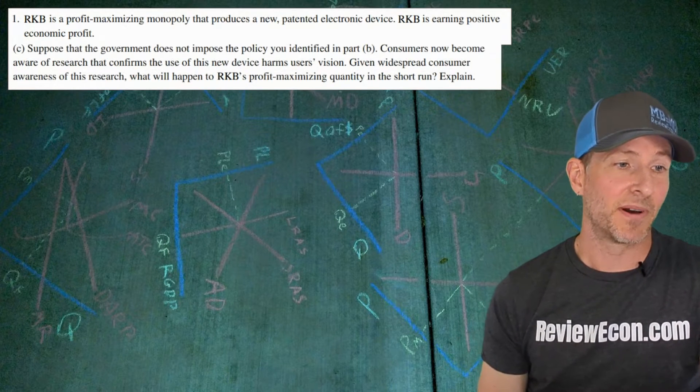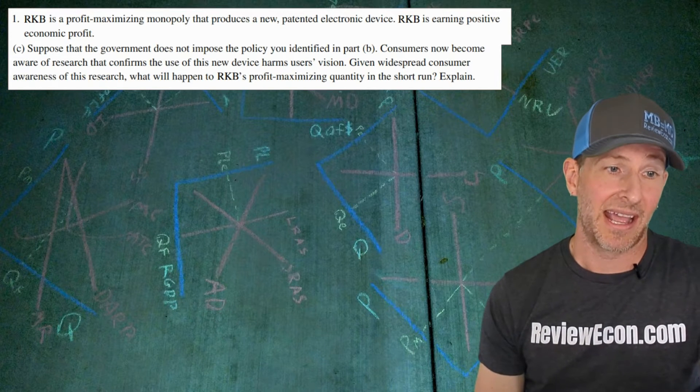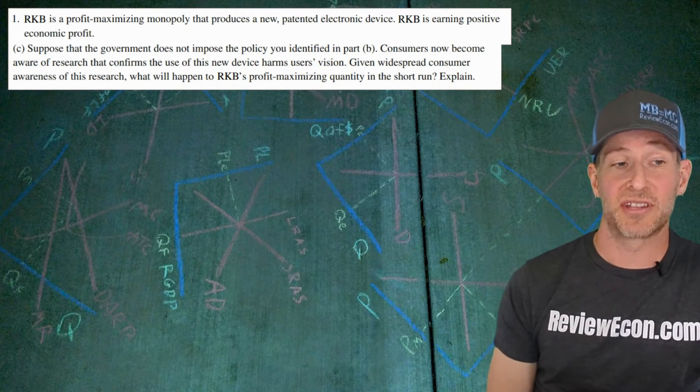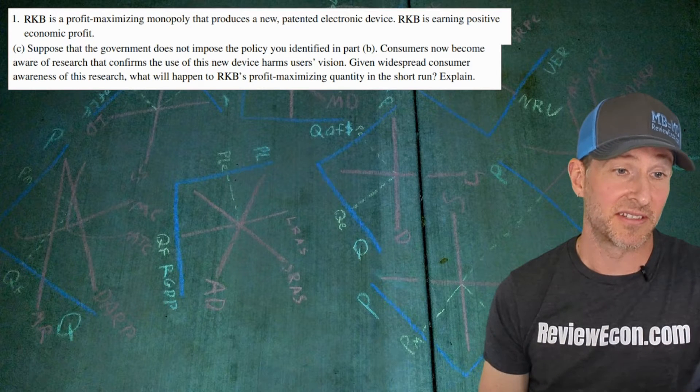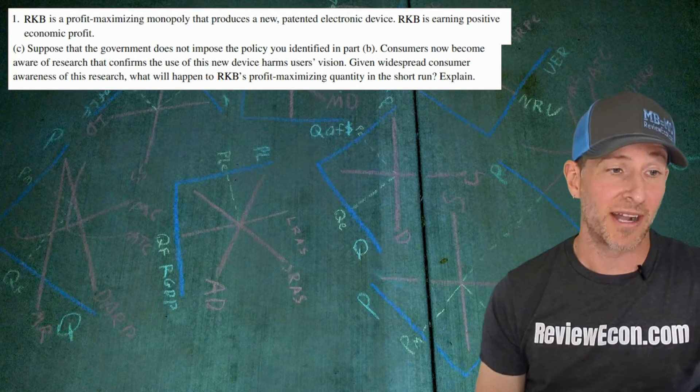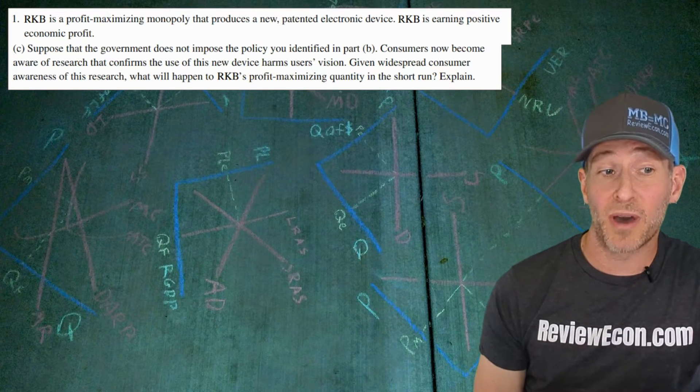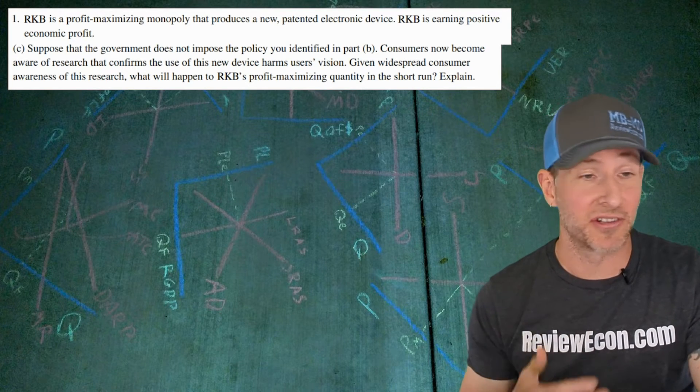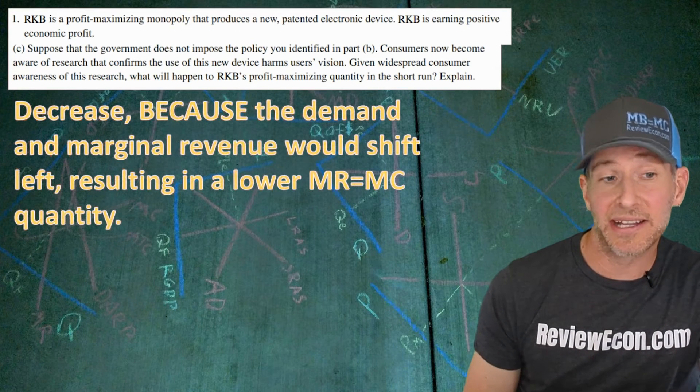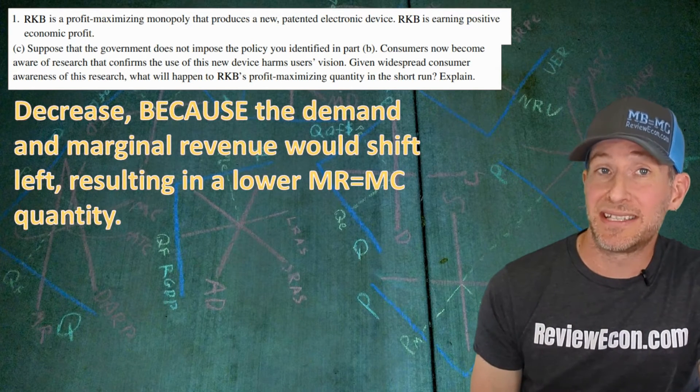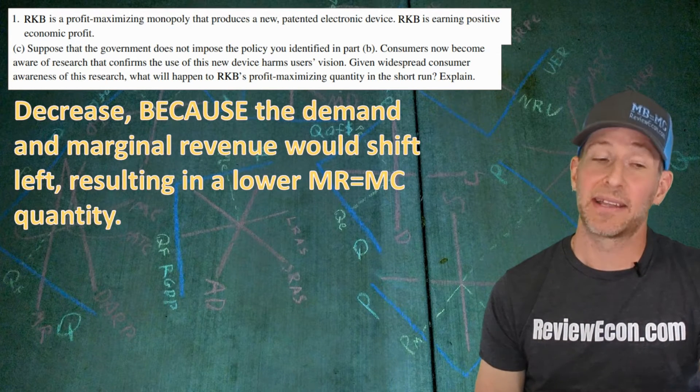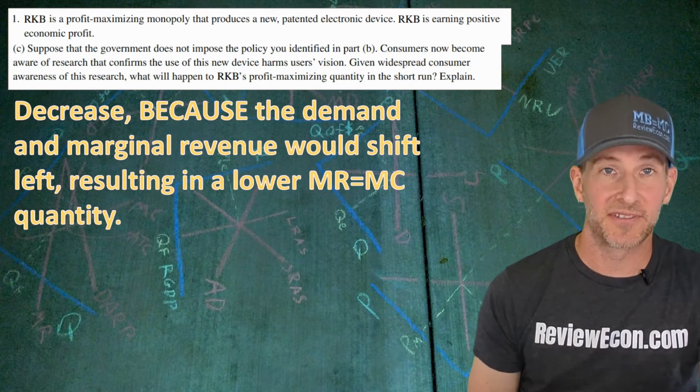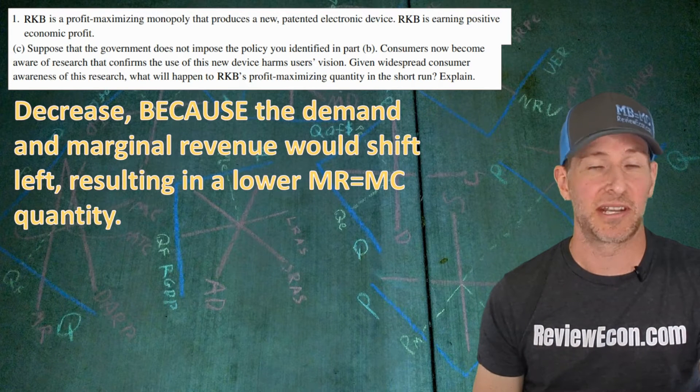Moving on to the next part. Suppose that the government does not impose the price ceiling policy we just identified. Consumers now become aware of research that confirms the new device harms users' vision. Given the widespread consumer awareness of this research, what will happen to RKB's profit maximizing quantity in the short run? Based on this new research that it's harmful, obviously people aren't going to want to buy it as much. So their profit maximizing quantity is going to decrease, but you have to connect it to the graph. The mechanism is that the demand and with that, the marginal revenue curve would shift to the left, and that results in a lower MR equals MC quantity.